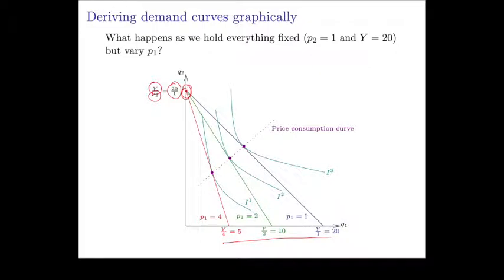On the other hand, if we look at the other corner of the budget line, remember all three of these lines give us different budget lines. Each of them corresponds to the same income, Y, of 20, but different prices for good 1, P1.